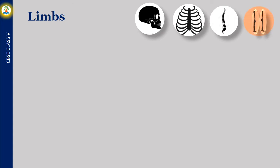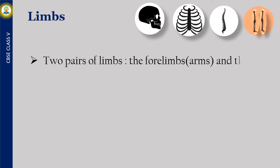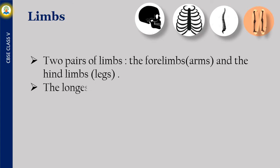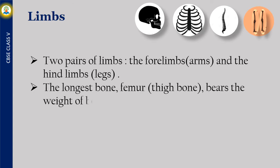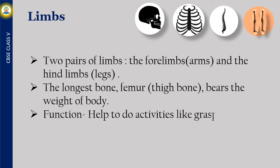There are two pairs of limbs — the forelimbs (arms) and the hindlimbs (legs). The longest bone, the femur or thigh bone, bears the weight of the body. Function: helps to do activities like grasping objects and movement.